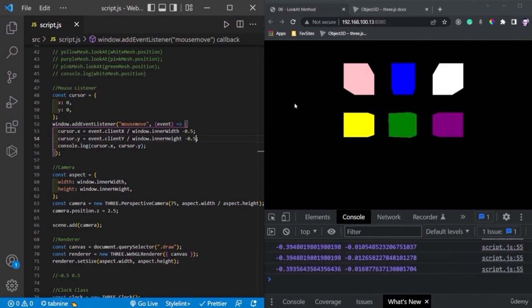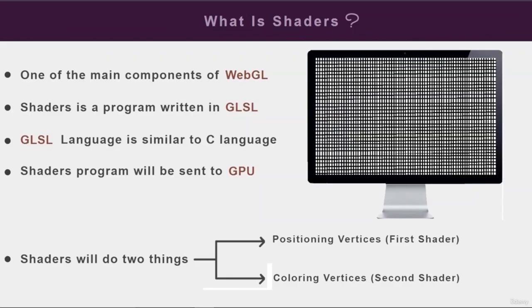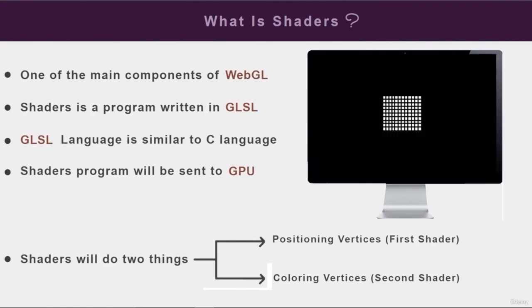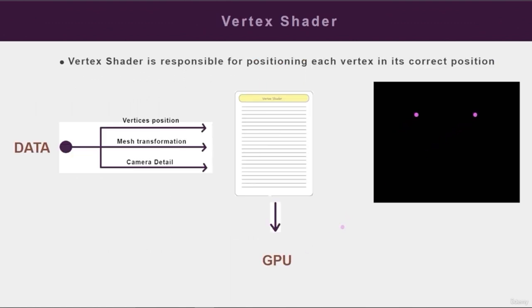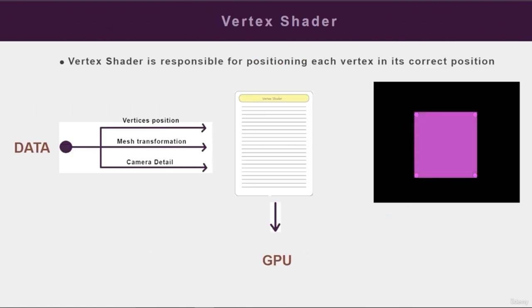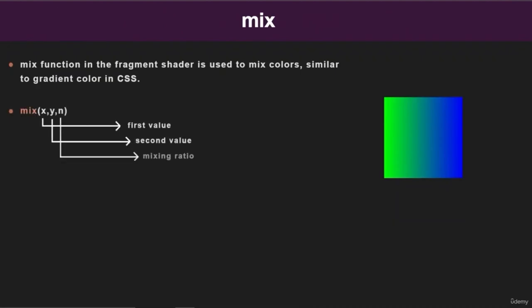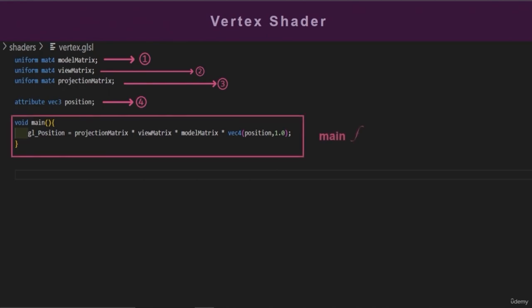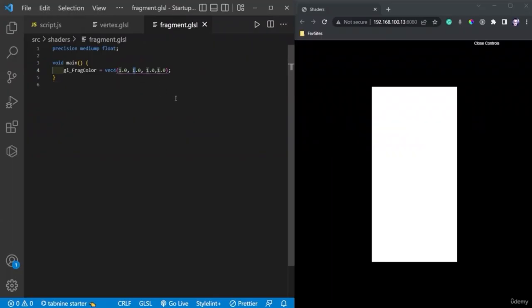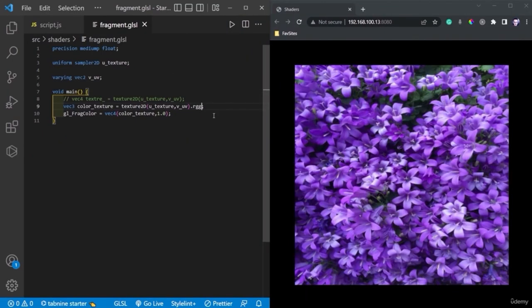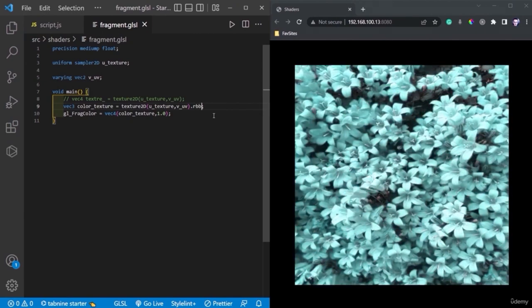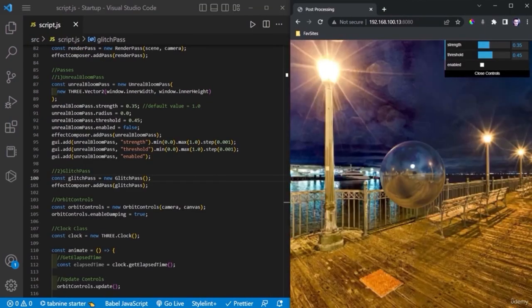That was the first section. The second section is the shaders section. Every 2D or 3D design placed on the web is done with the help of a shaders program. This section consists of 8 lessons. Through these lessons, we will learn a new language, which is GLSL. We will learn about the components of the shaders program, how to write shader code, and how to use our knowledge to create immersive and creative websites.